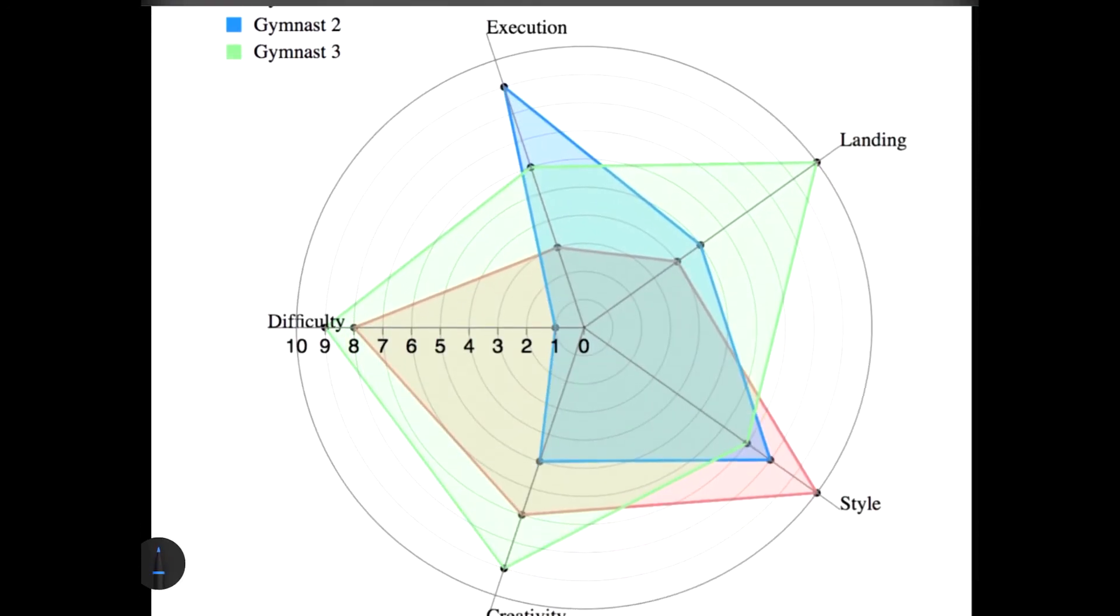Starting from the execution, we see that gymnast one is represented in the red color. So the first red color in the execution panel is one, two, three. So I could say that the score is three in execution. In landing it's just one more than execution, so we can directly give a four.